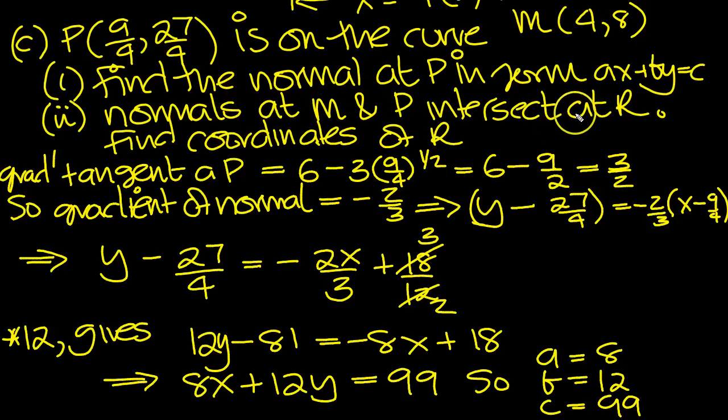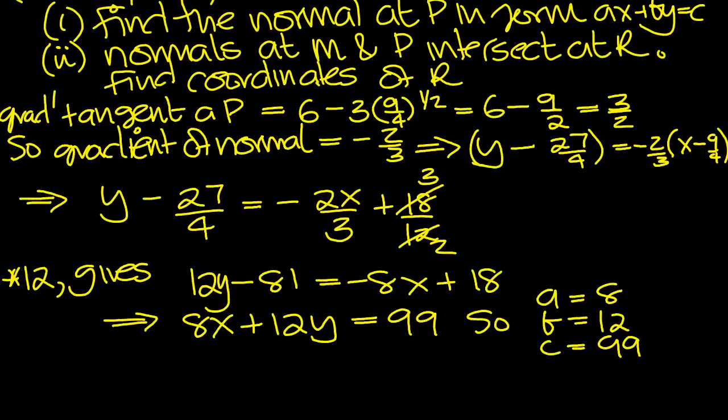Normals at M and P intersect at R. This is the gradient of the normal, this is the equation of the normal, and they intersect at R, find the coordinates of R. We know the normal at P.